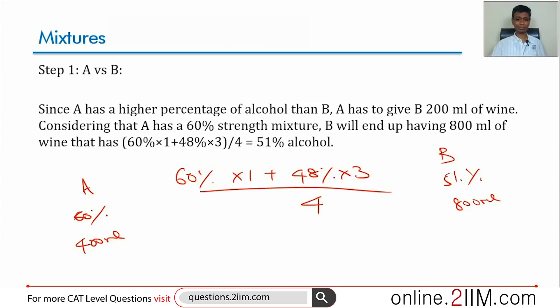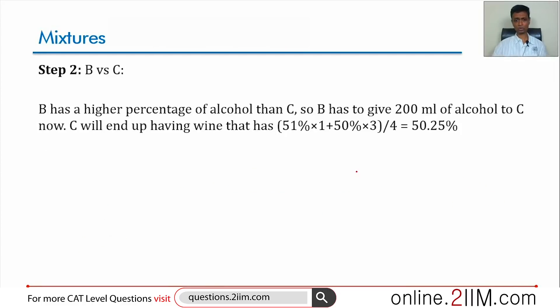I'm just computing this, doing the math, mixing in the ratio of 1 is to 3. A will have to give to B because A has the higher percentage than B. Okay, now let's go on to B versus C.